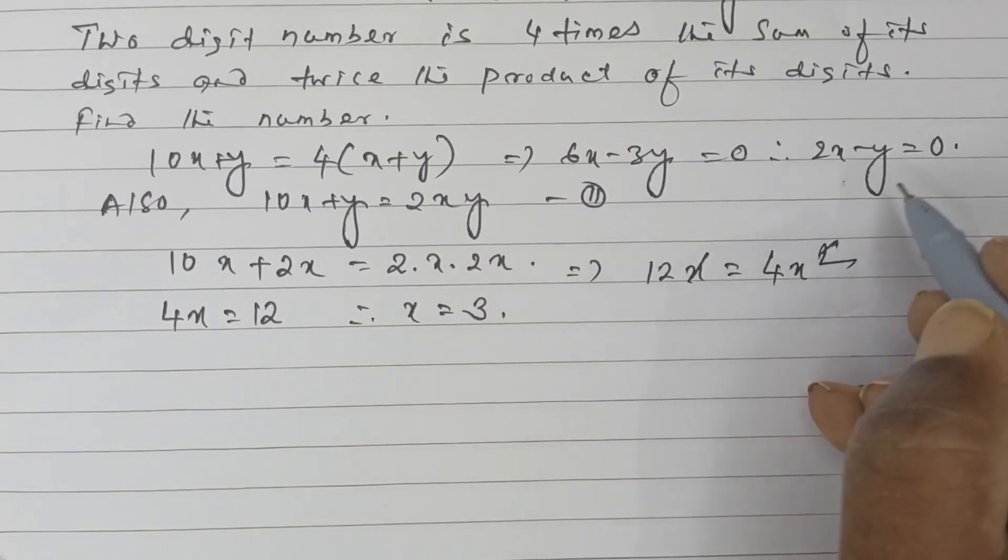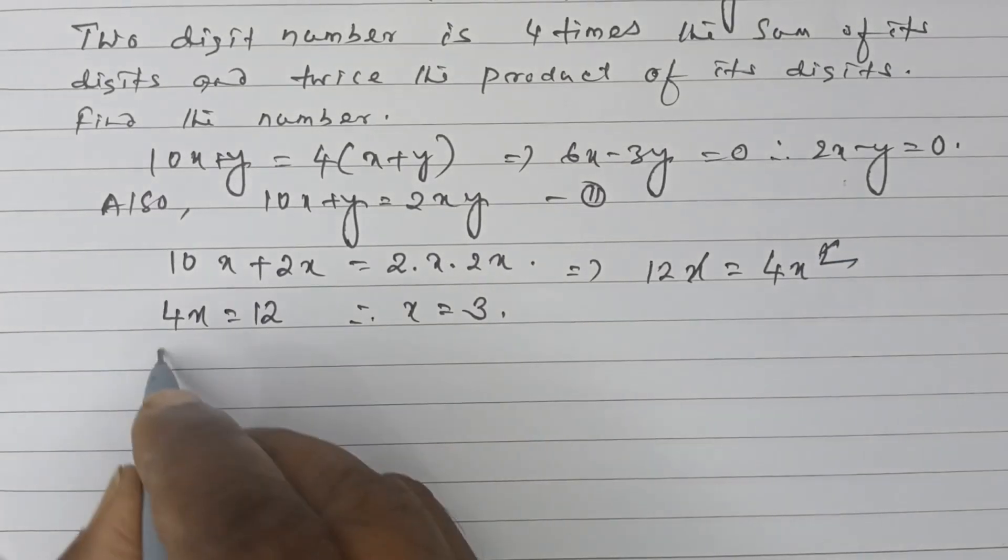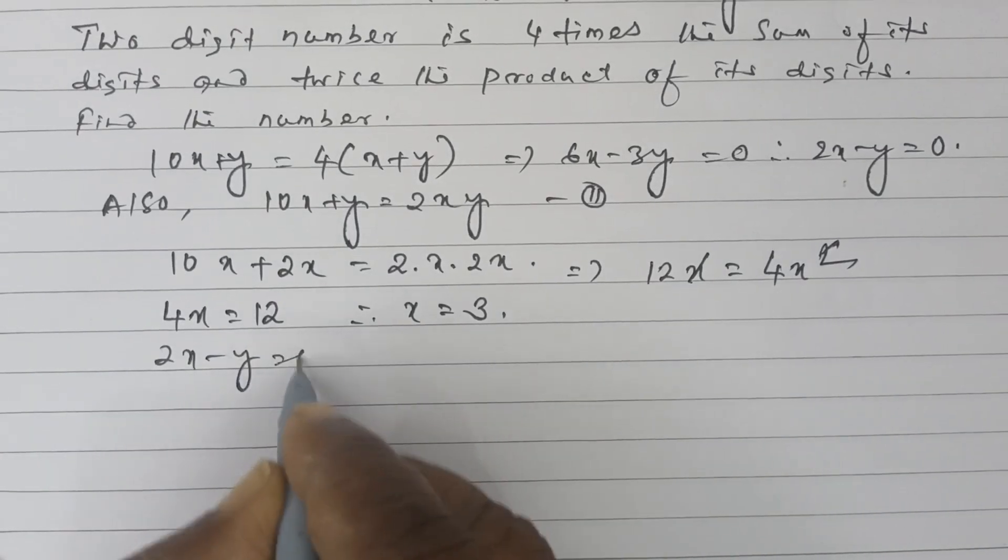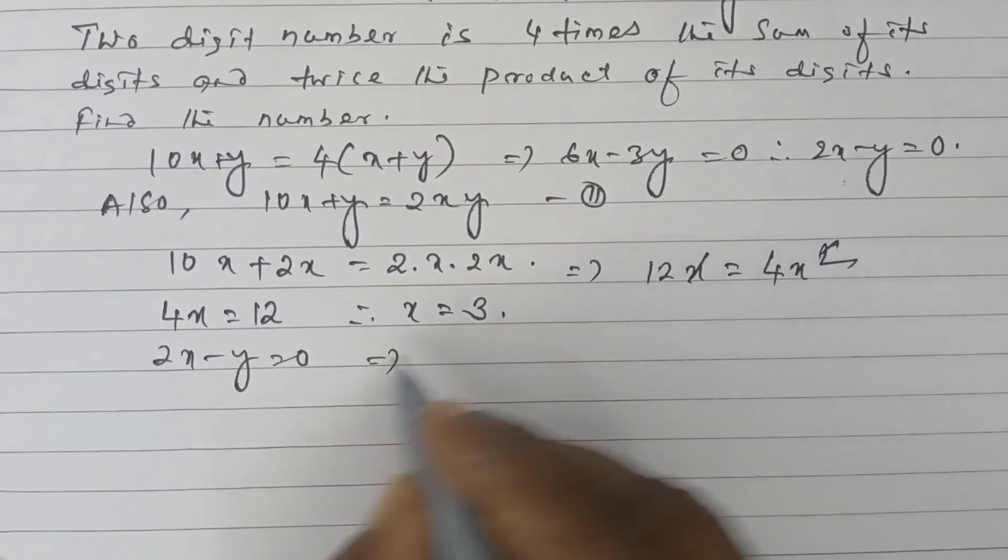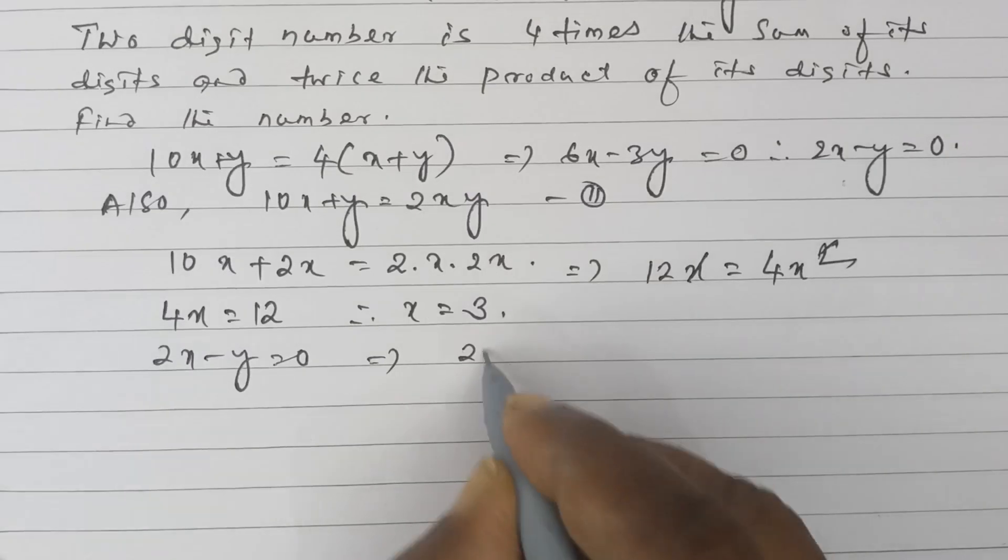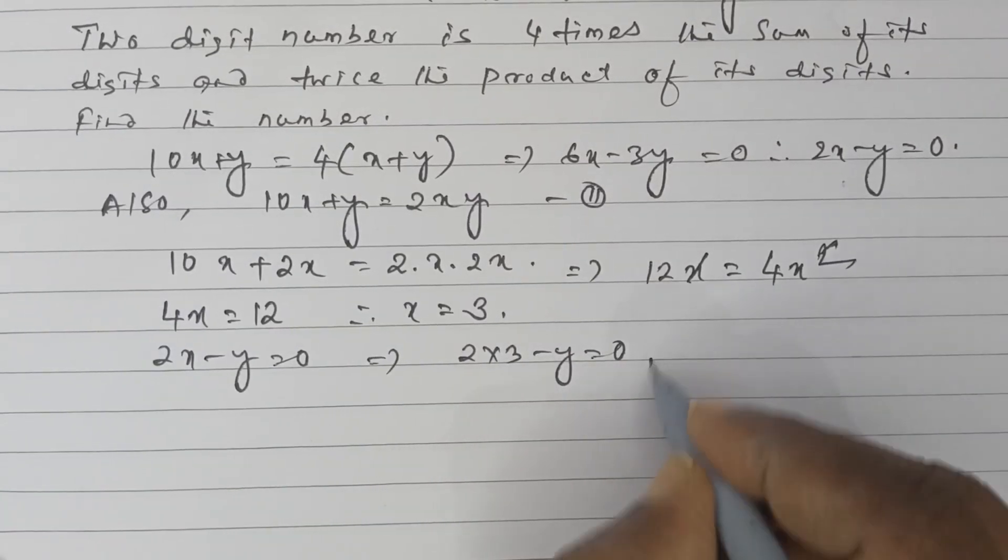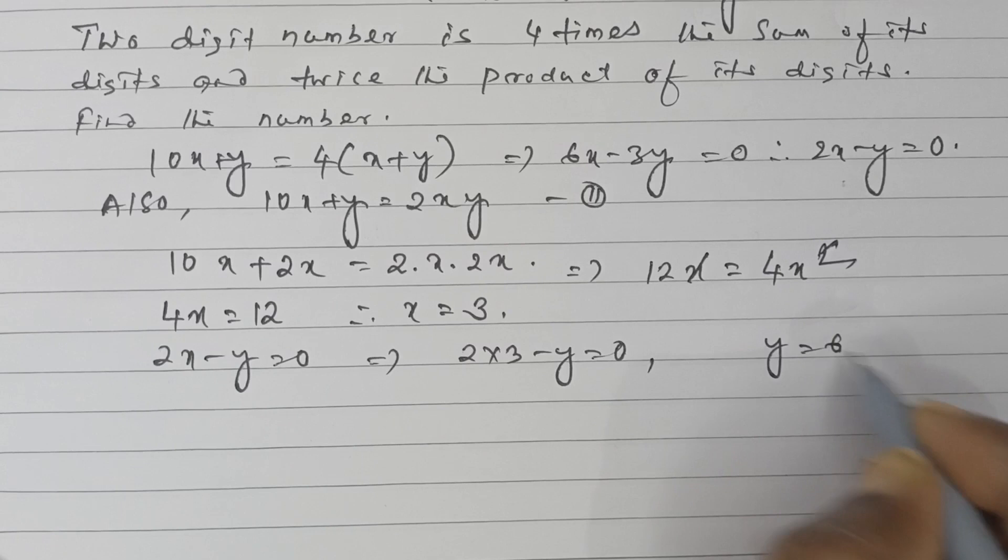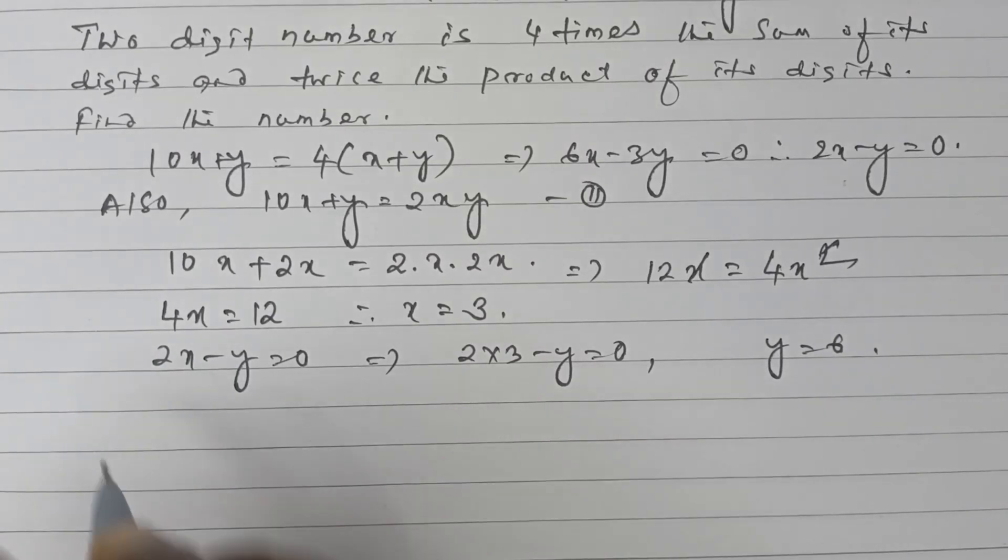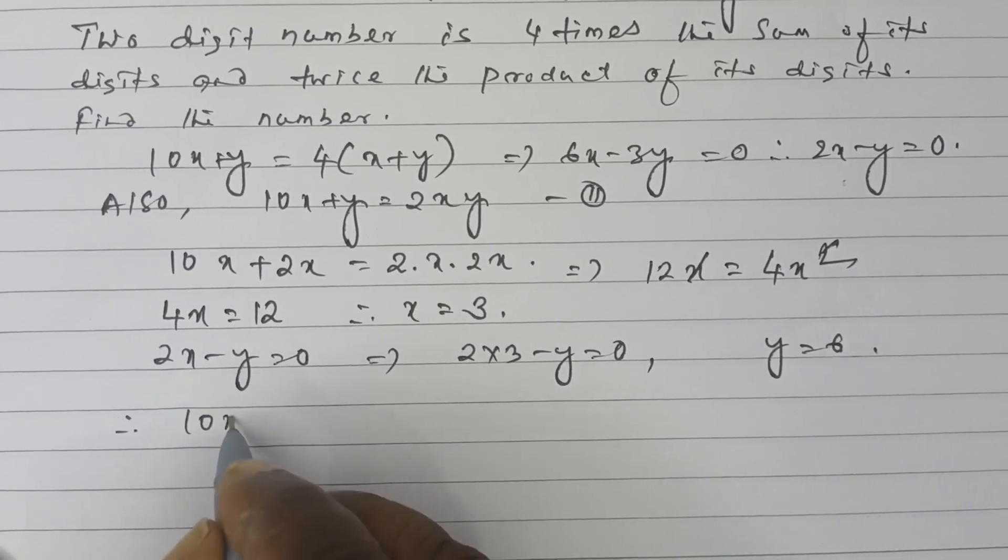Keeping this value in equation 1, that is 2x - y = 0 with x = 3: 2(3) - y = 0, so y = 6. The original number is 10x + y.